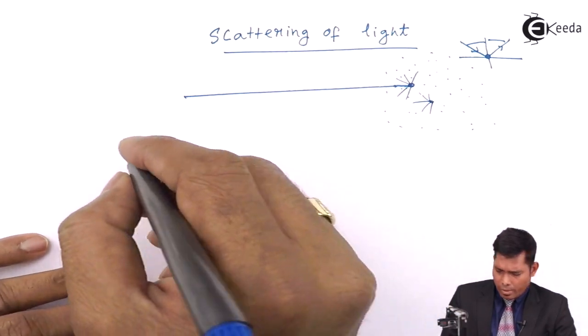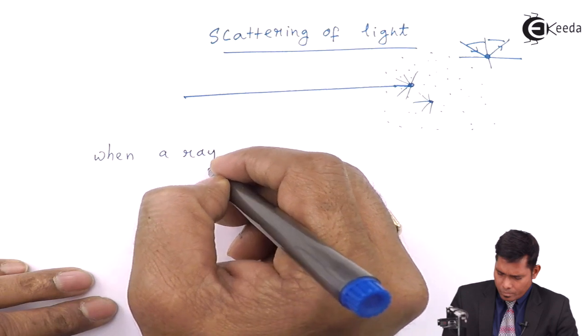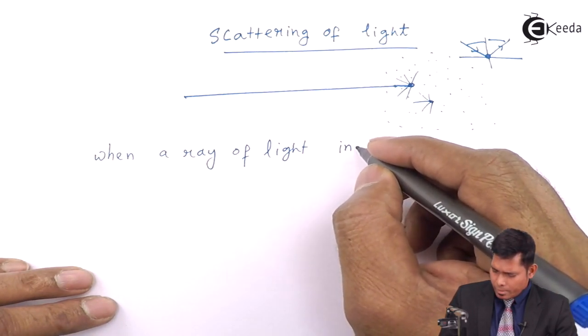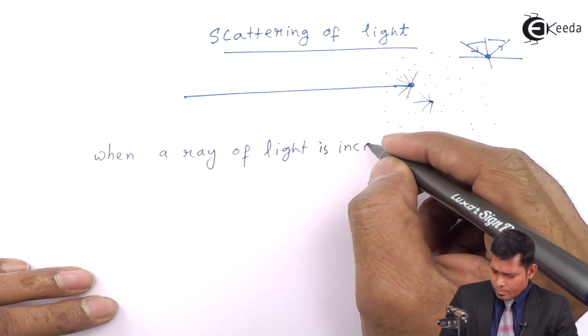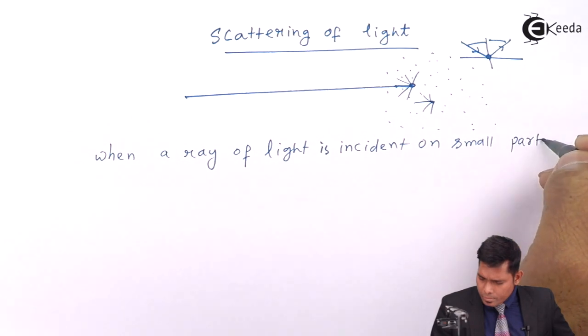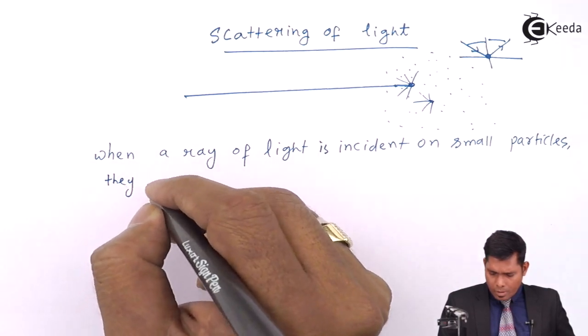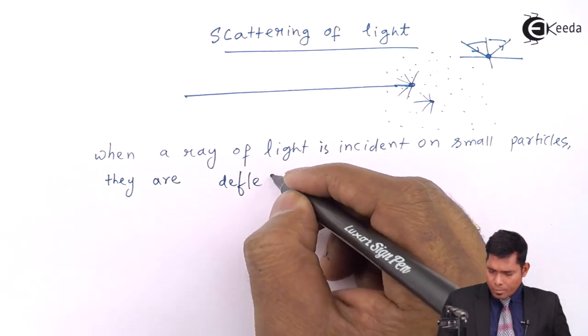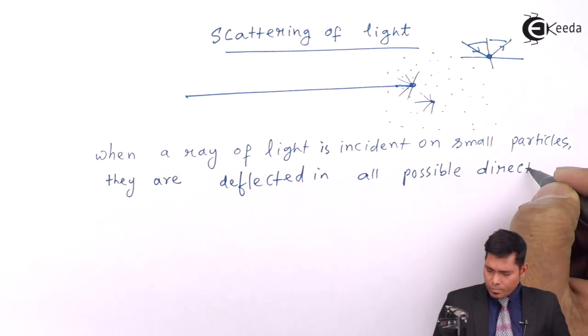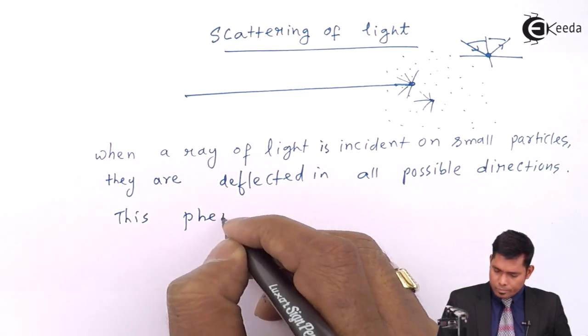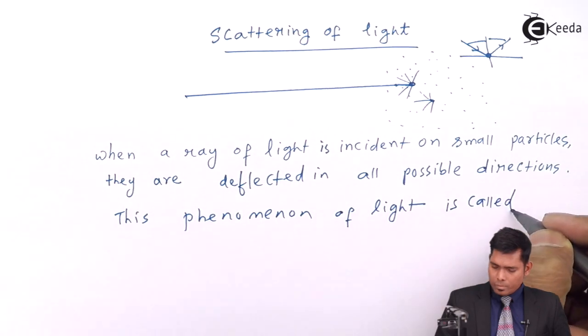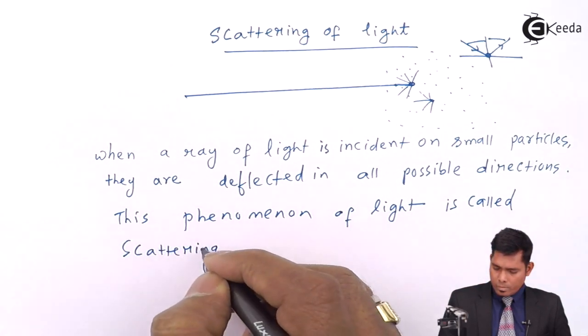So here is the definition: when a ray of light is incident on very extremely small particles, they are deflected in all possible directions. This phenomenon is called scattering.